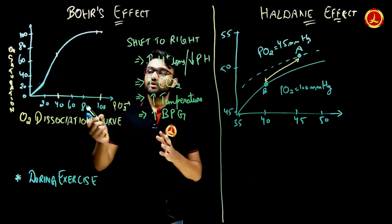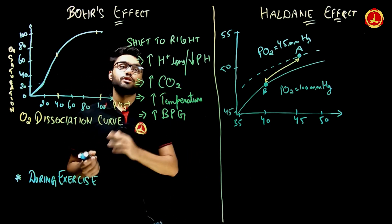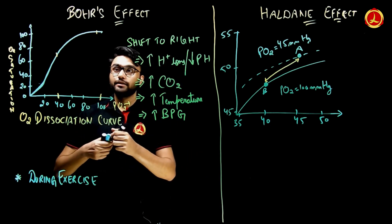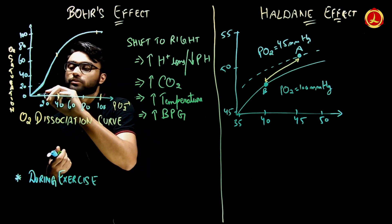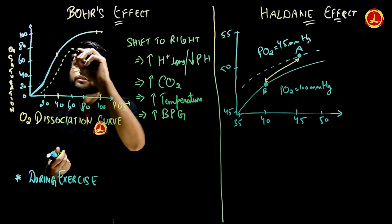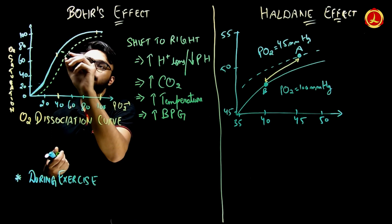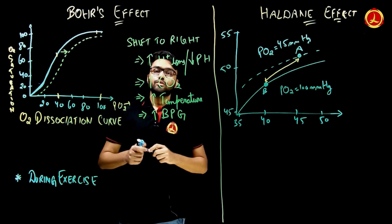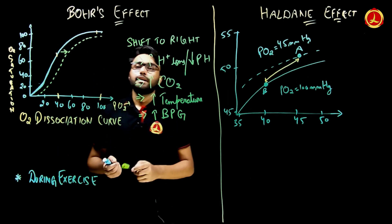The Bohr effect is the shifting of the oxygen dissociation curve to the right. This curve will shift to the right, and I will now explain why.